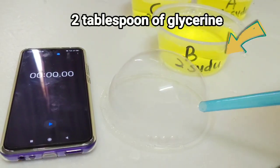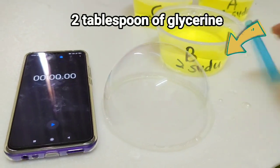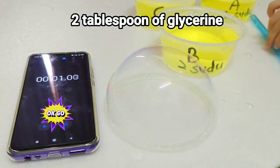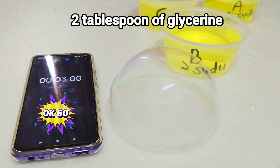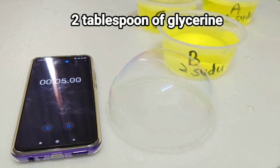Next, we'll use 2 tablespoons of glycerin. Then set the stopwatch. We need to look carefully.